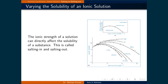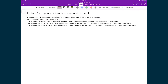This is called salting in and salting out. We're now going to do an example illustrating this phenomenon, where we're going to use a sparingly soluble compound — in this case magnesium fluoride — which dissolves into water to form magnesium ions and fluoride ions with an equilibrium constant of 6.4 times 10 to the minus 9, and we're going to examine three different cases.